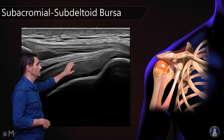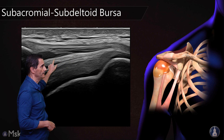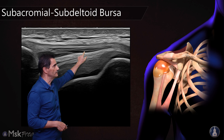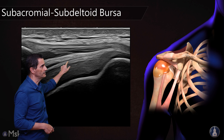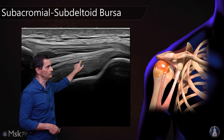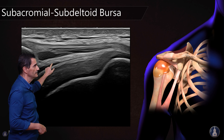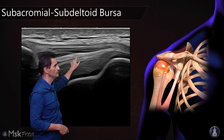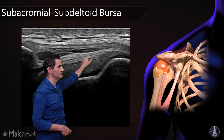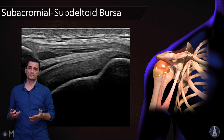The first layer, the superficial layer, will be located in the deep fascia and attached to the deep fascia of the deltoid. The deep layer will be located attached to the supraspinatus, and the content of the bursa will be this very, very thin anechoic line between those hyperechoic lines. This is the content of the normal bursa.